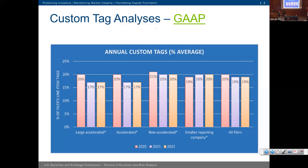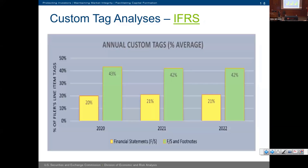Comparing that to IFRS, the custom tag rate is much higher. The reason is that the GAAP taxonomy has over 20,000 tags while the IFRS taxonomy has about 5,000 tags. That makes sense because IFRS covers multiple jurisdictions and different types of filers across different countries, so you'd expect more custom tags on the IFRS side than the GAAP side. But similar to GAAP, the IFRS custom tag rate has been coming down, and when a new accounting standard is issued by IFRS or IASB, we do see a slight uptick.